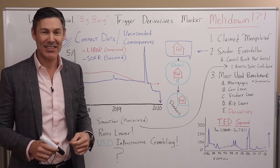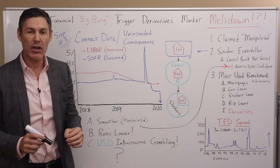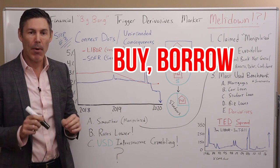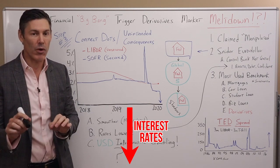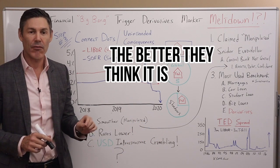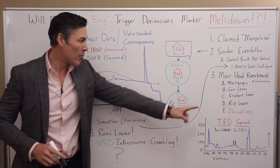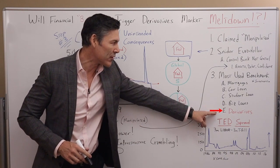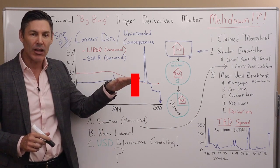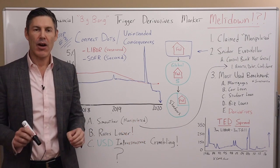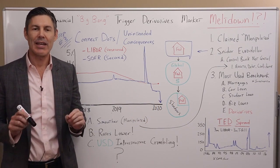So why would they want lower interest rates? They need more and more debt. In their minds, they want to promote people to go out there, buy, borrow, and spend. So the lower they can get interest rates — and this is their words, not mine — the better they think it is for the overall economy. And if interest rates of almost everything — mortgages, car loans, student loans, business loans, and derivatives — are tied to a benchmark rate, why not have a benchmark rate that's a lot lower than the previous one? It allows the Fed and central banks to drop interest rates in the real economy even further.